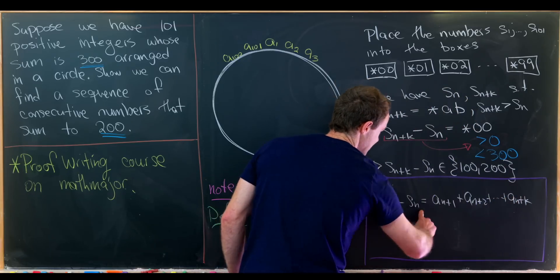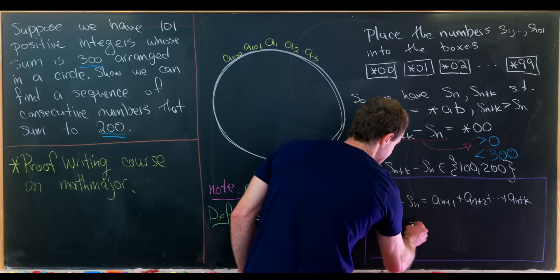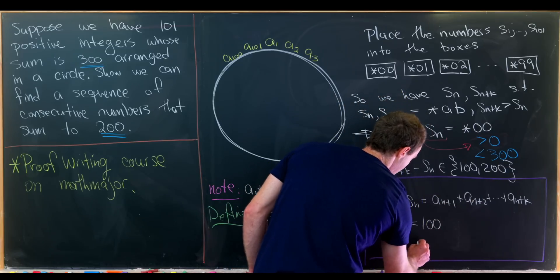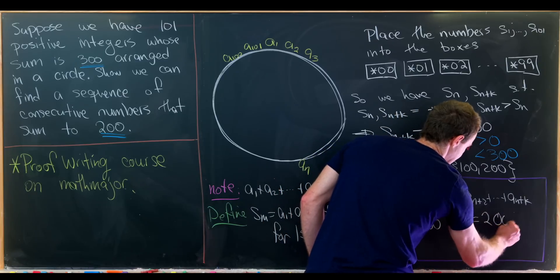So what does that mean? That means this string of numbers is equal to 100 or it's equal to 200. Being from the set 100 to 200 means you're either one of them.